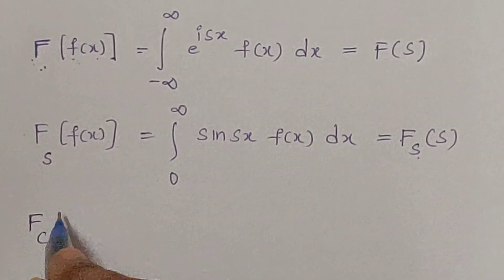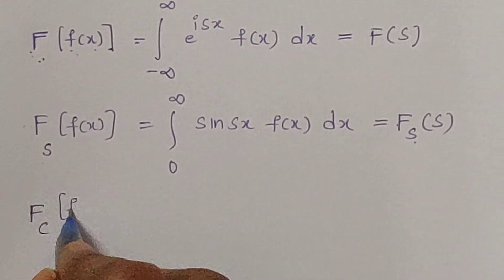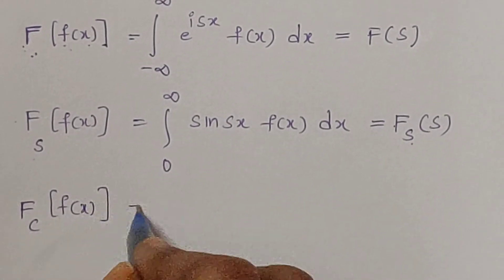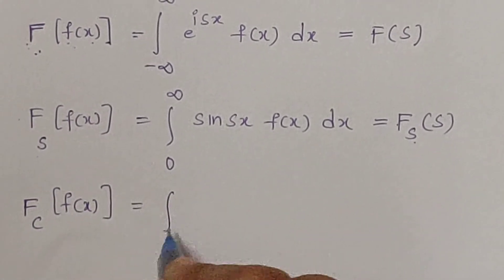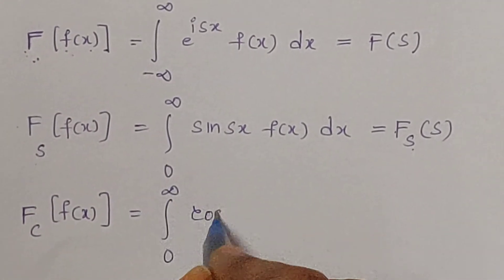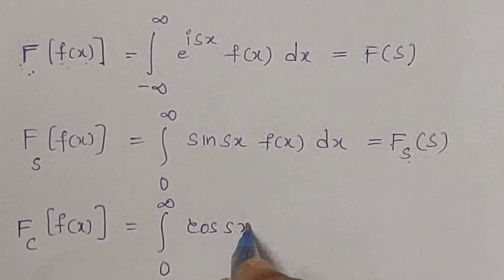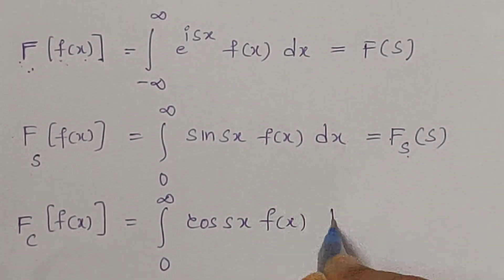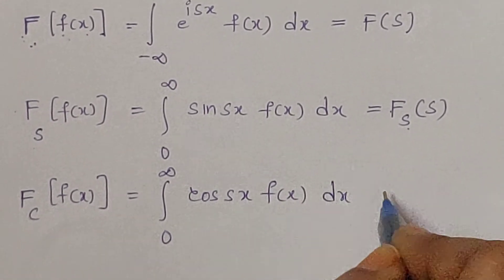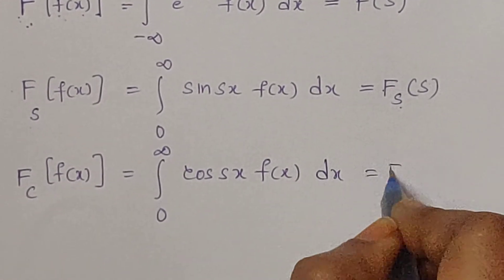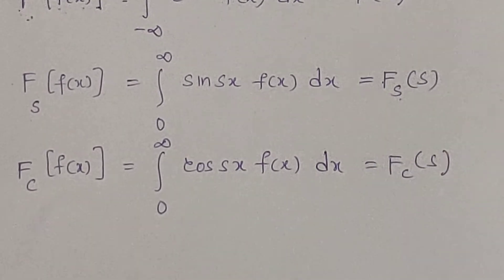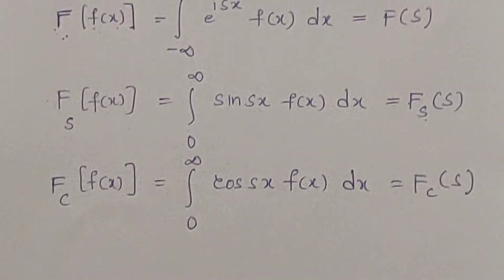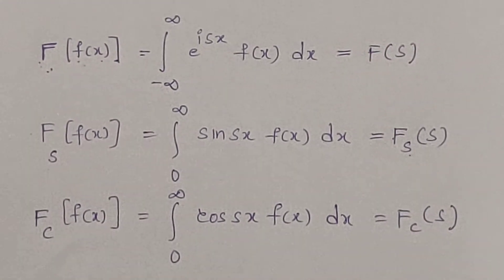The Fourier cosine transform of the function f of x is equal to the integral from 0 to infinity of cos(sx) times f of x dx. Keep these three definitions in mind.